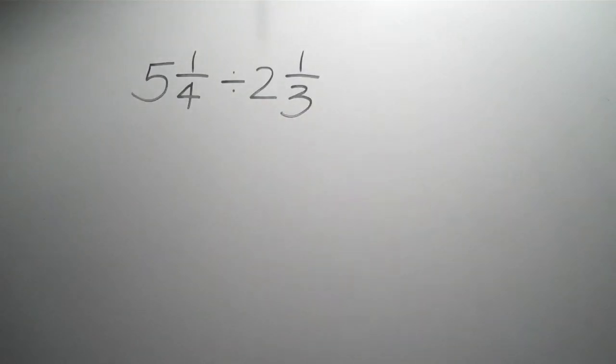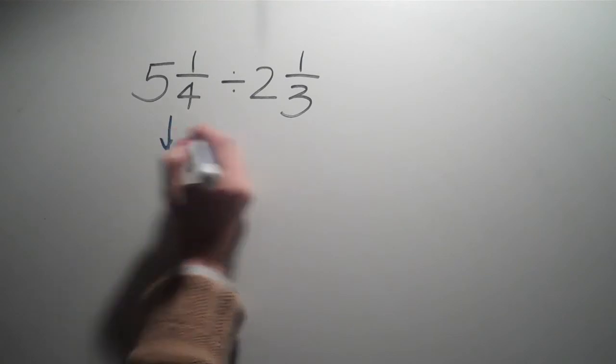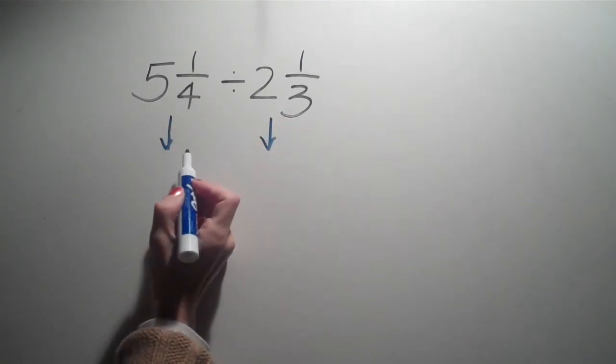Let's do another one. We have 5 and 1 fourth divided by 2 and 1 third. So that's a mixed number. So what do we do here? Well, we know we have to change this right away to improper fractions.